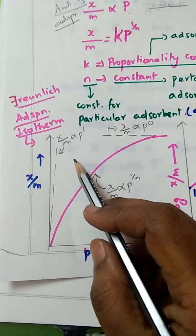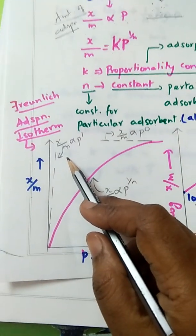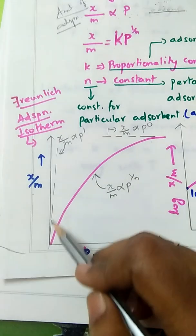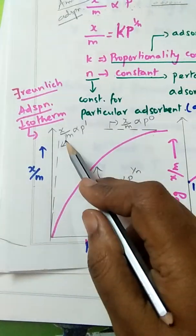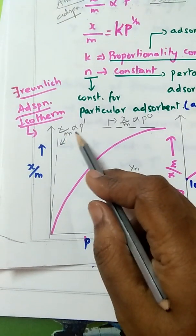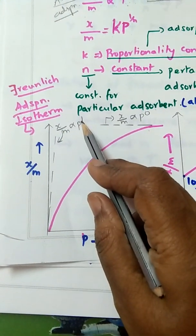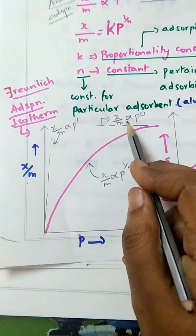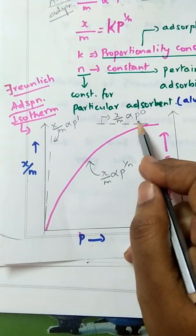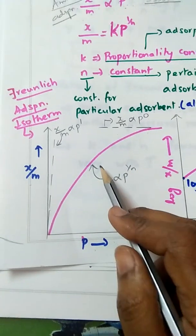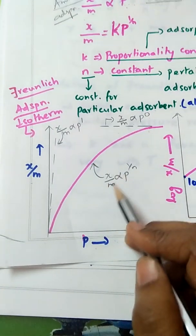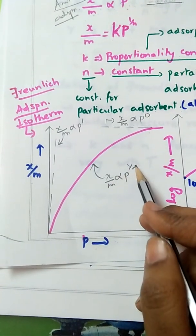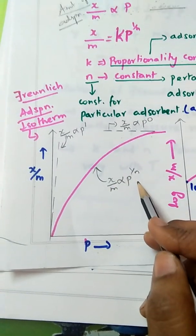It is difficult to calculate the slope value from this curve because at the initial region x/m is proportional to p^1, at the plateau x/m is proportional to p^0, and in between x/m is proportional to p^(1/n).